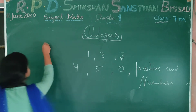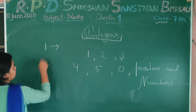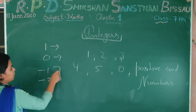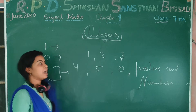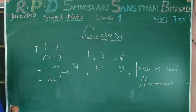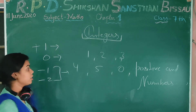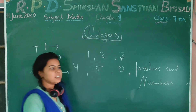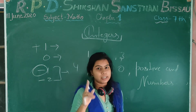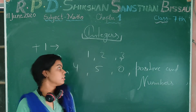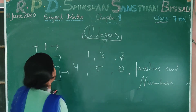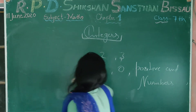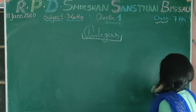We can say that 1 is also an integer, 0 is also an integer, minus 1, minus 2 are also integers. If the sign is positive, it will be an integer. If the sign is negative, it will be an integer. So we can say that integers are of 2 categories. There are 2 categories of integers.